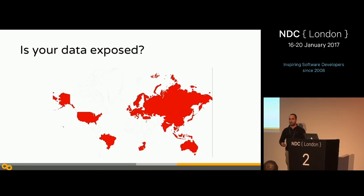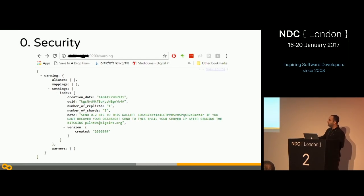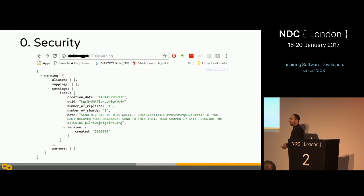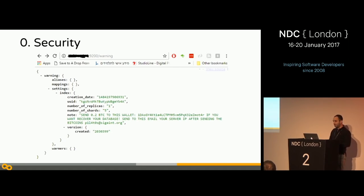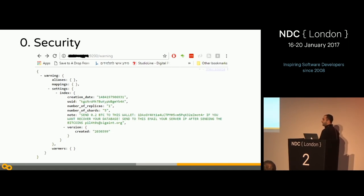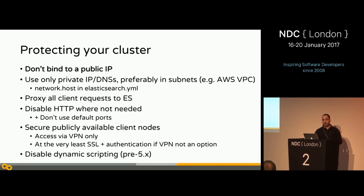I'll show you some do's and don'ts about that. Notice the URL — Elasticsearch is accessible via the HTTP REST API over port 9200. As you can see, this is real, from a couple of days ago: a public IP address accessible from my home network on port 9200, with a 'warning' index containing the ransom message. That cluster was exposed to the web, which allowed the attacker to take the data, delete it, and then ask for ransom.